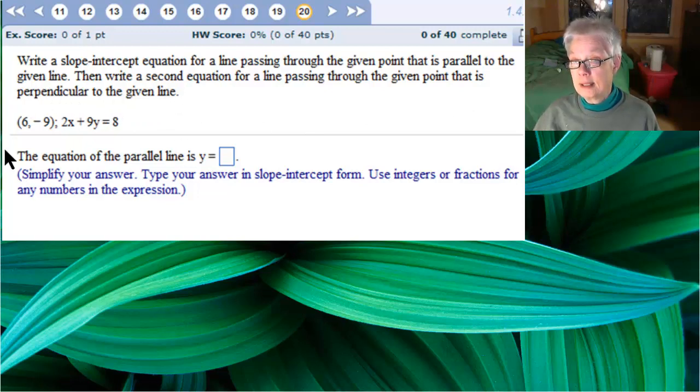The given line is 2x plus 9y equals 8 and the point is 6, negative 9. The instructions say to use integers or fractions. That means no decimals.